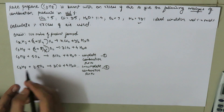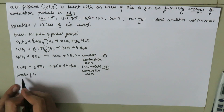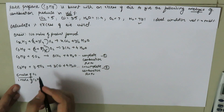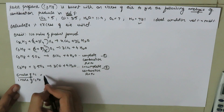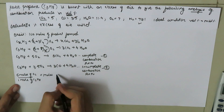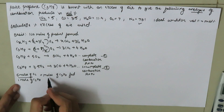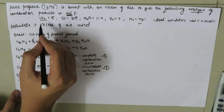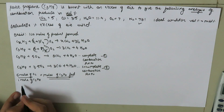From reaction number one, we know that 5 moles of oxygen are required to burn one mole of C3H8. We can find the moles of oxygen required by multiplying this by moles of C3H8 fed. However, we don't know the moles of C3H8 fed, so we will use the product composition to calculate it.